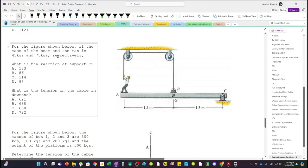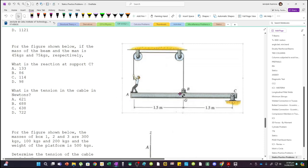For the figure shown, if the mass of the beam and the man is 45 kilograms and 75 kilograms, what is the reaction at support C and what is the tension in the cable in Newtons? To analyze this problem, if we release the cable it will fall, so this is a statics situation.